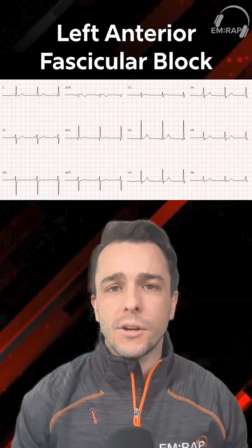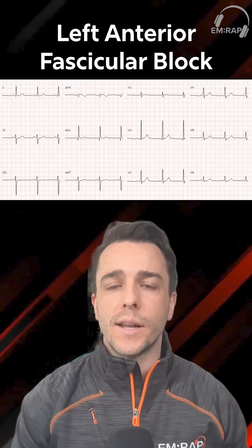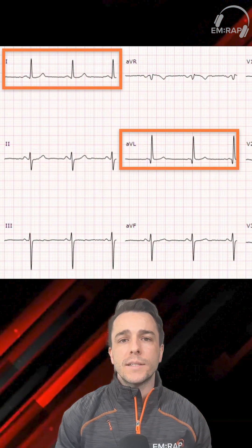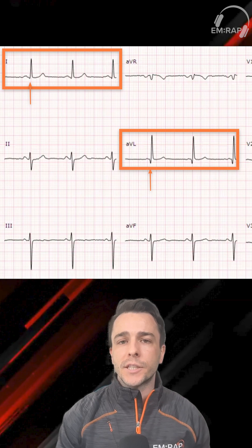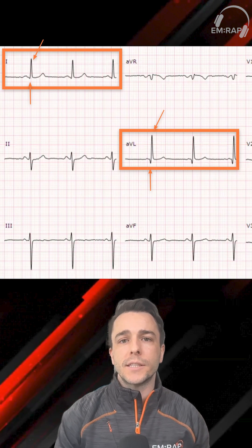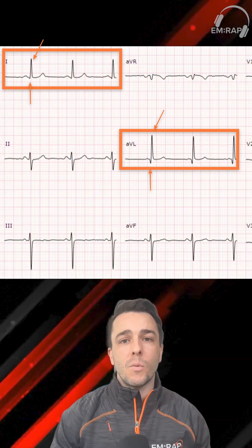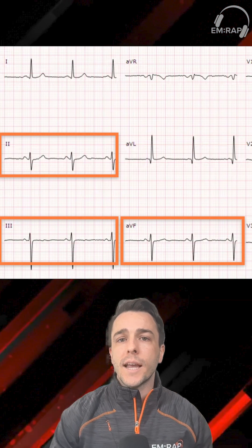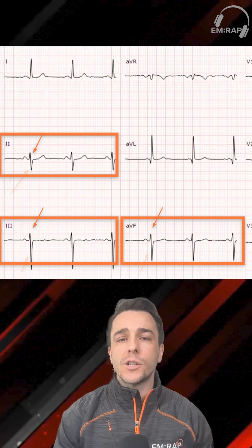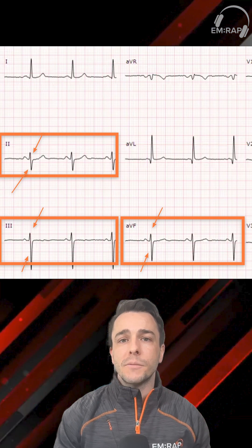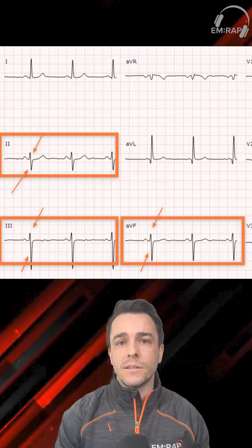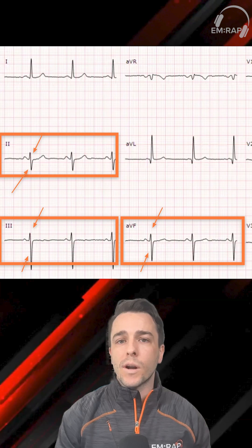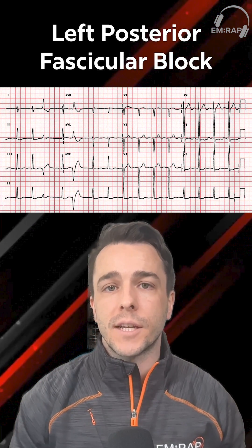To diagnose a left anterior fascicular block, there are a few things we have to look out for in these leads. Leads I and AVL are going to be the same — we're going to see a small negative deflection in our Q wave and a large positive deflection in our R wave. Then in our inferior leads II, III, and AVF, we're going to see a small positive deflection in our R wave and a large negative deflection in our S wave. That pattern in all of the inferior leads is diagnostic of a left anterior fascicular block, which is way more common than its counterpart, the left posterior fascicular block.